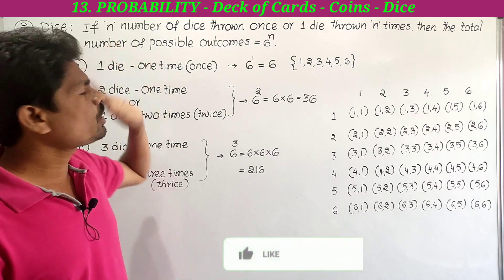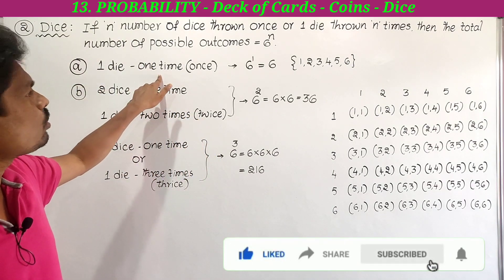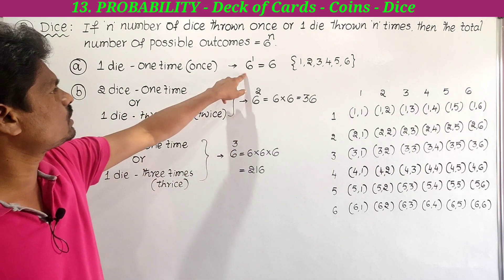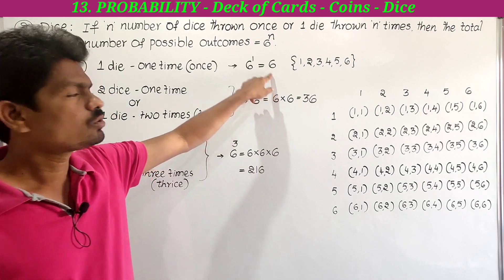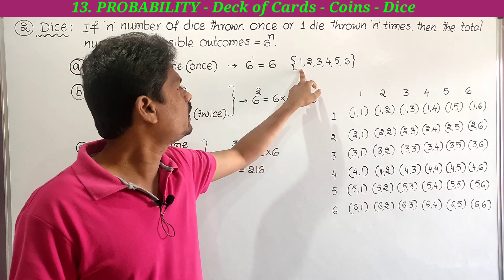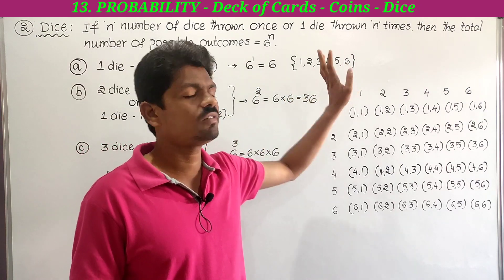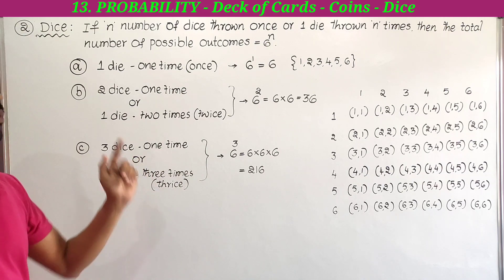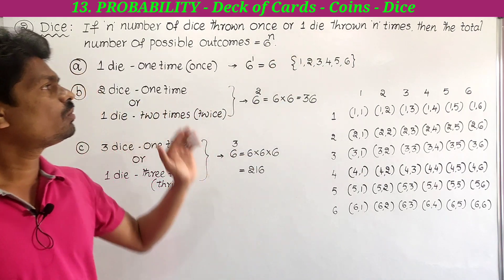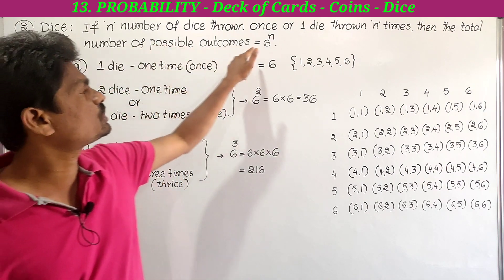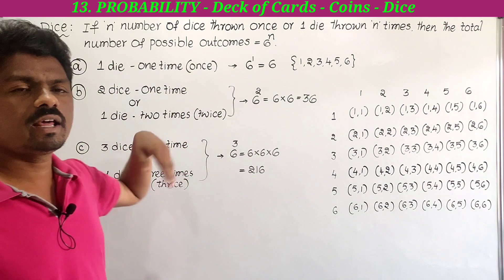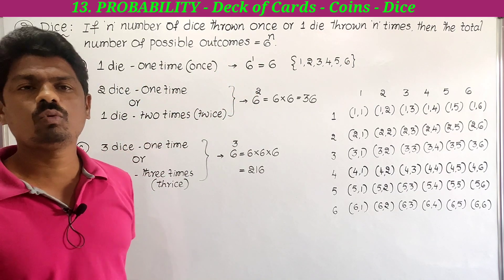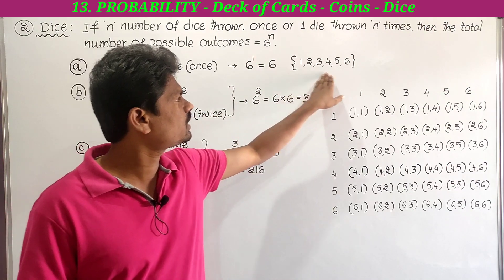If n equals 1 — that is, one die thrown one time or once — then the total number of possible outcomes equals 6 to the power 1, which is 6. The six possible outcomes are 1, 2, 3, 4, 5, or 6. One die has 6 faces, each face has one digit from 1 to 6, so total possible outcomes are 6.